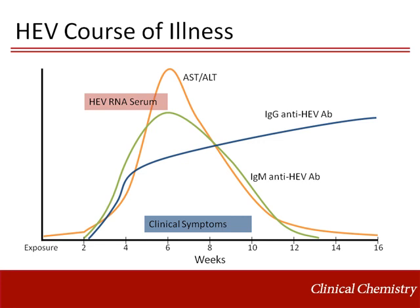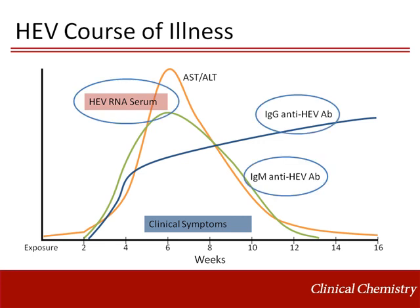IgM should disappear by three months, while IgG will persist for months to years. Hepatitis E viremia generally peaks early and may be undetectable by the time a patient presents to the doctor. With current methods, we can test blood using an enzyme immunoassay to detect IgG and IgM and nucleic acid amplification testing to detect hepatitis E RNA.